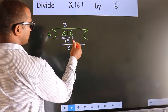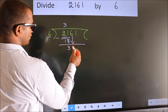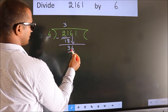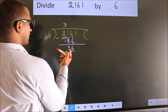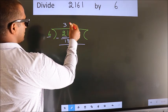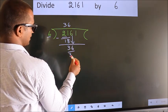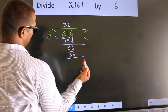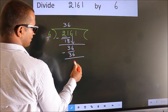After this, bring down the beside number, so 6 down, giving us 36. When do we get 36 in the 6 table? 6 sixes, 36. Now we subtract. We get 0.